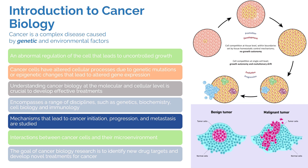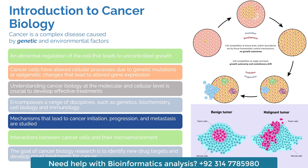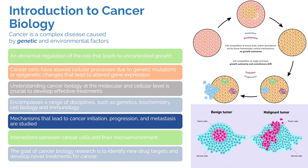Cancer cells have altered cellular processes. In cancerous cells compared to normal cells, some biological pathways are dysregulated due to mutations or epigenetic changes. A mutation can be a subtle amino acid change that alters protein structure, causing a cascade of dysregulated pathways. Epigenetic changes can control which genes are expressed or transcribed, leading to a dysregulated cellular process that makes the cell uncontrollable by natural mechanisms.